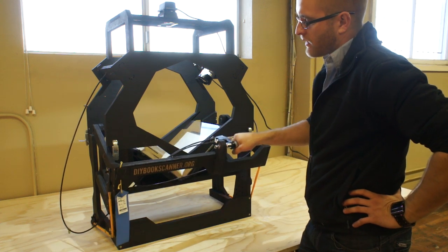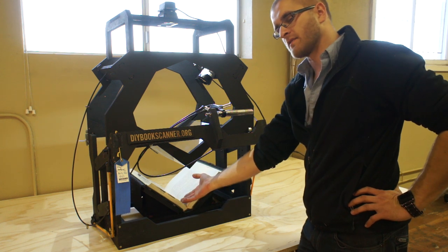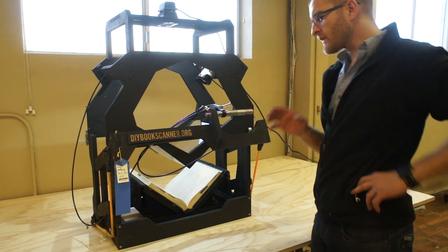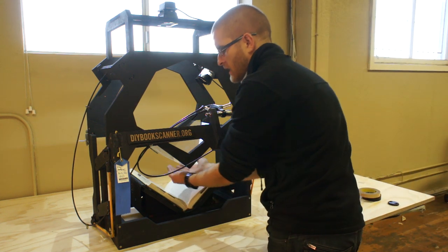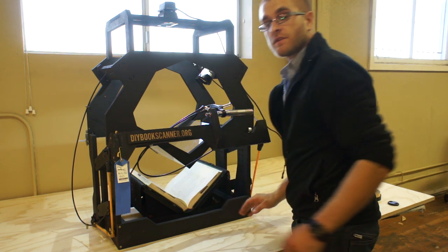In almost all DIY scanner designs to date, the book remains still and the platen comes down to meet it. But the reason for doing it this way is because if you put a paperback book in here which wants to stay closed, when you pull the platen away, the book will close and you can lose your page.